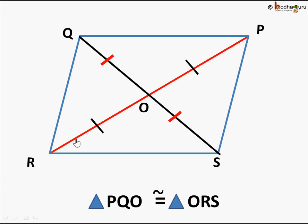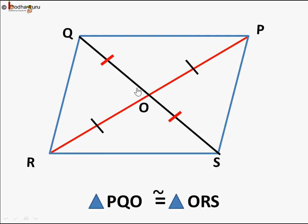These two triangles are congruent, which means OP is equal to OS and OP is equal to OR. So the diagonals of a parallelogram intersect at point O in such a way that they bisect each other — OP is equal to OR, and OQ is equal to OS.